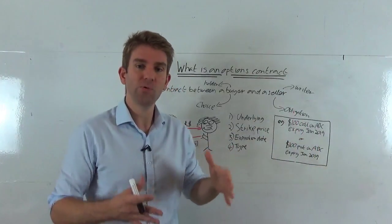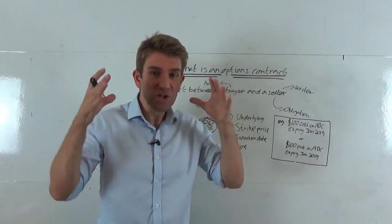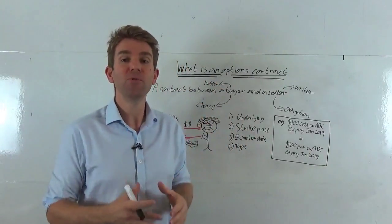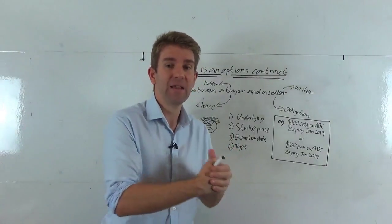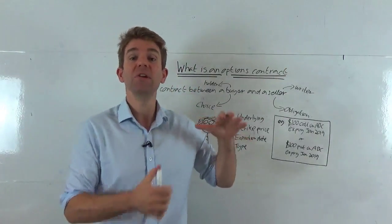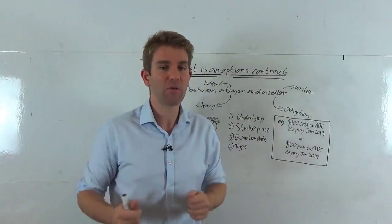And the type, is it a put option or a call option? Again, I'm going to go into this massive detail, but just broadly speaking, a put option is the right to sell that underlying asset and a call option is the right to buy the underlying asset. So call, generally you've got a bullish outlook. Put, you've got a bearish outlook if you're a buyer of the options.